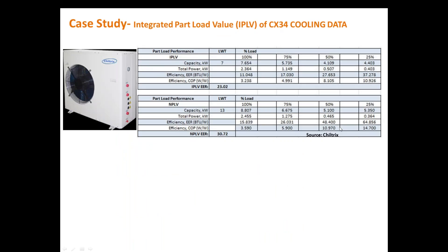As a case study, IPLV and NPLV are calculated for the Chilltrix CX-34 chiller model. At various loading conditions — 100, 75, 50, and 25 percent — they calculated capacity, total power, energy efficiency ratio, COP, and WR. The IPLV based on WR comes out to 23.02, and NPLV comes out to approximately 31. This is the type of data you will get from the manufacturer.